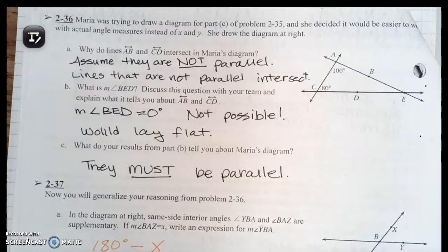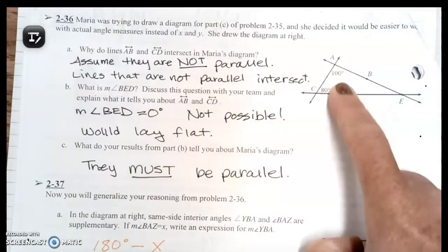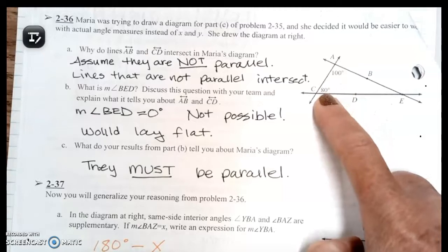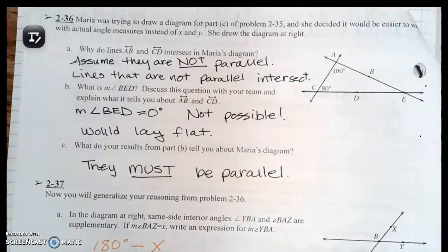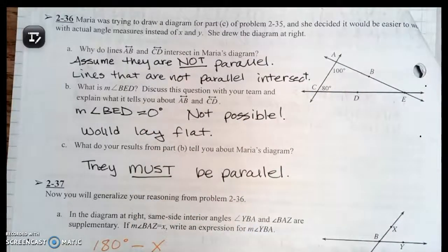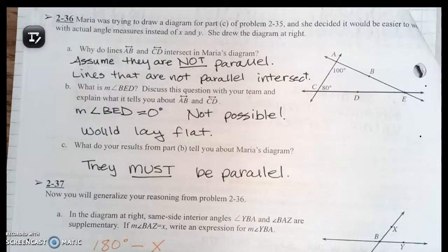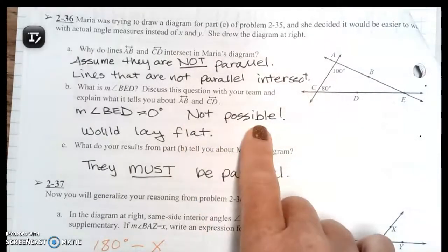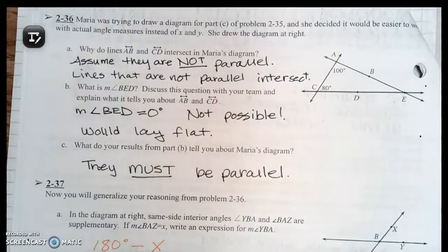Part B says what is the measure of angle BED? We know that triangles have 180 degrees total. If you look at the angle up at the top, you have 100. The angle down here you have 80. Add those two together you get 180. That means this angle over here would have to be zero. And guess what, having an angle that is zero is not possible. A zero degree angle would lay flat and make a straight line.